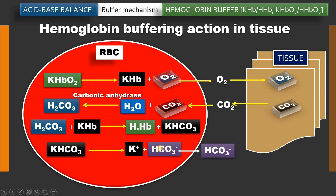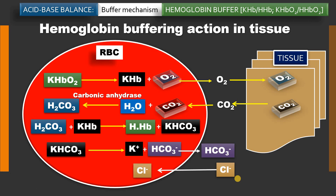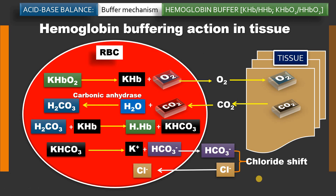Since one anion — bicarbonate — is going out of the RBC into the plasma, electrical neutrality must be maintained. In order to maintain electroneutrality, another anion from the plasma — chloride — comes inside the RBC. This efflux of bicarbonate and influx of chloride near the tissue is called the chloride shift.